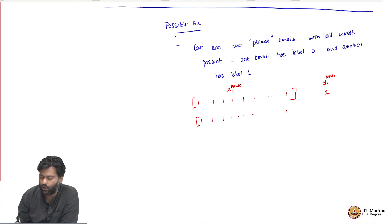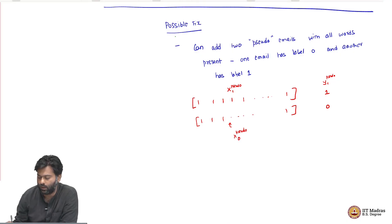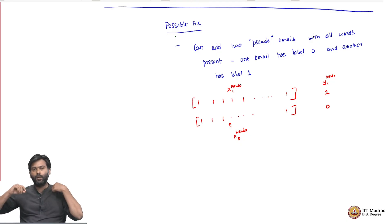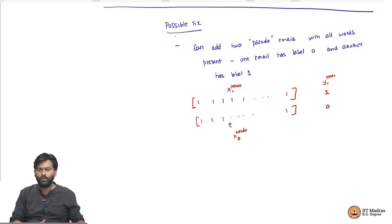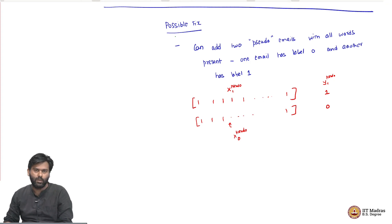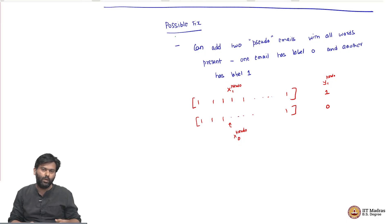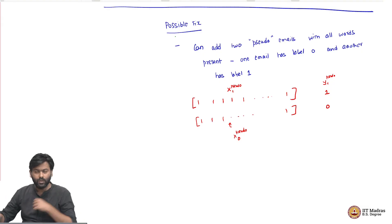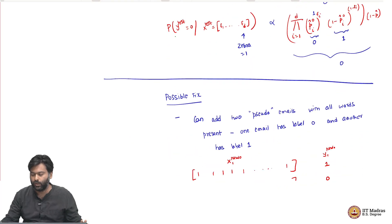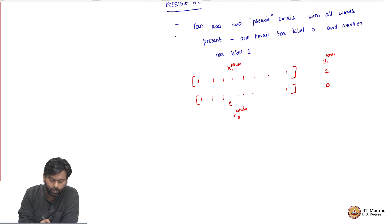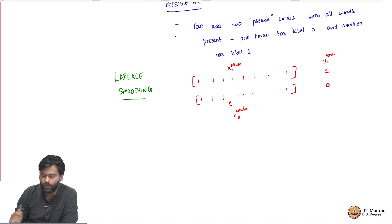What this achieves is that every word appears at least once in an email marked spam and at least once in an email marked non-spam. This means the probability estimates from maximum likelihood cannot be 0, because the counts are no longer 0 — every word has some chance. The probability might be really small, but it is enough to tackle the problem of both estimates becoming 0. This way of doing things is popularly called Laplace smoothing.